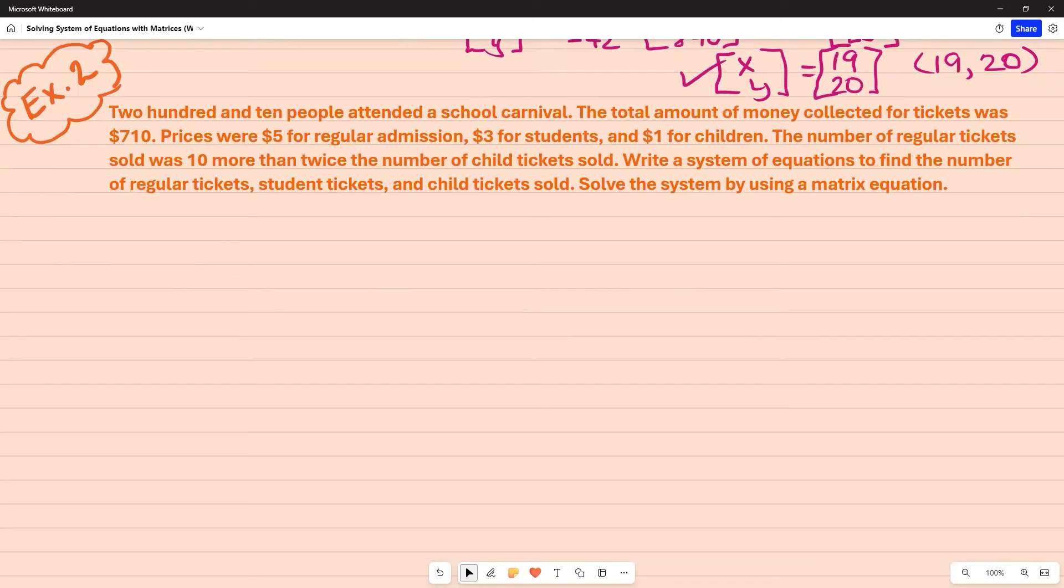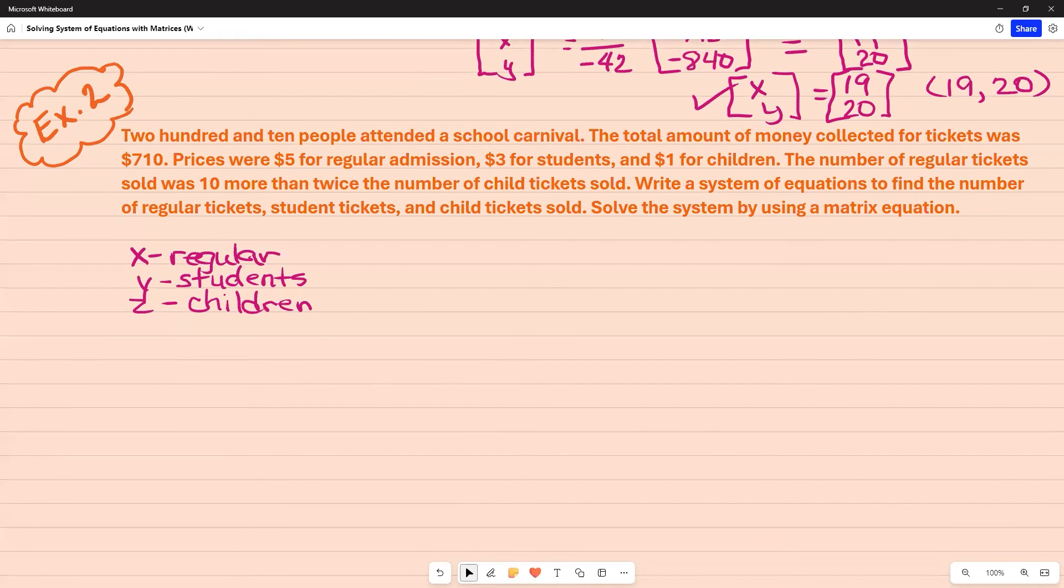So I see that I actually have three things going on. So I am going to identify each one by a variable. So for my X, I'm going to label it for my regular admission, my Y for students, and my Z for children. Now what I want to do is look at my word problem to try to figure out how to set up my systems. I see that I have 210 people, but I have three ticket types. So I have X plus Y plus Z is going to equal 210.